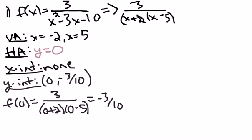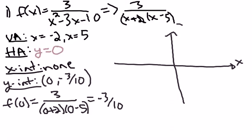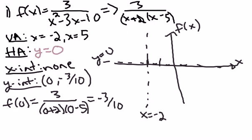Now we'll do a rough sketch. I'll mark the important points — we have a vertical asymptote at negative 2, a horizontal asymptote at zero, and another vertical asymptote at 5. There are no x-intercepts, so there's no crossing of the horizontal asymptote. We'll need some test points. If you plug in anything to the left, you'll get a positive number in that area.